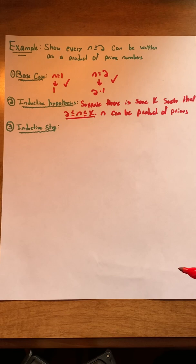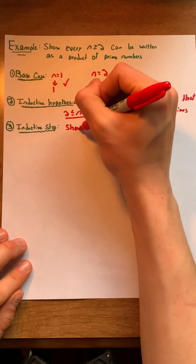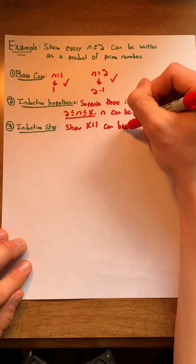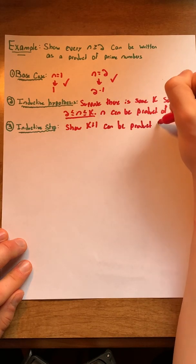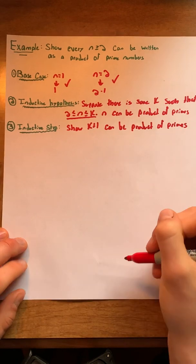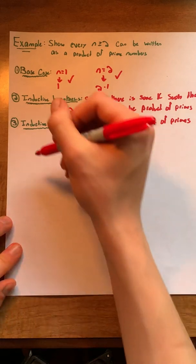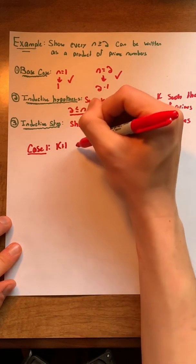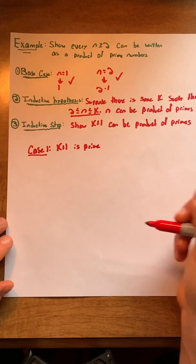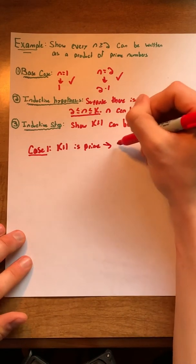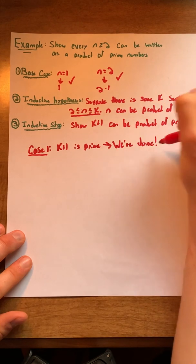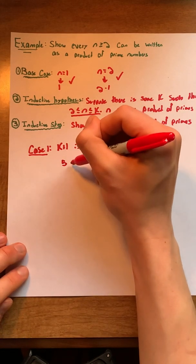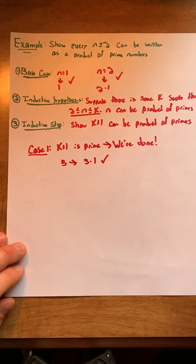Finally, we're going to go into the inductive step, where we want to show that k + 1, our first value outside the range, can be written as a product of primes. In this inductive proof, we actually have two cases. Our first case is that k + 1 is prime. In that case, we're actually done — for example, we could take the number 5; we know 5 can be written as 5 times 1, and that works, so we'd be done.